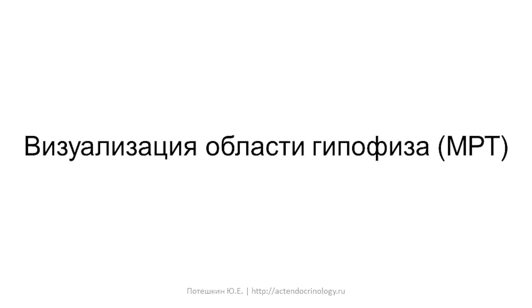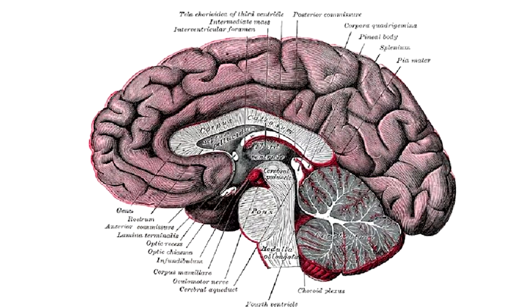Hello, dear colleagues. This is what the brain looks like in an anatomical atlas. In the area highlighted in red, there should be a pituitary gland.